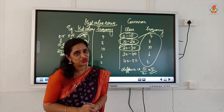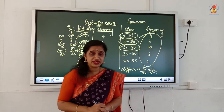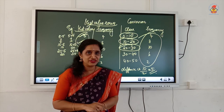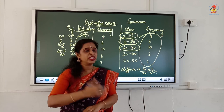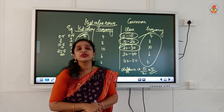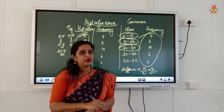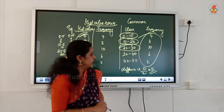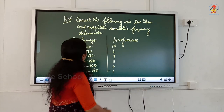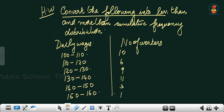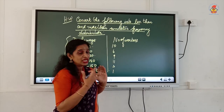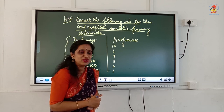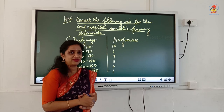We have finished with inclusive series, exclusive series, conversion of inclusive into exclusive, open-end series, less than and more than cumulative frequency series, and mid-value series. There is a small homework: convert the given normal continuous frequency distribution into less than and more than cumulative frequency distribution. Thank you.